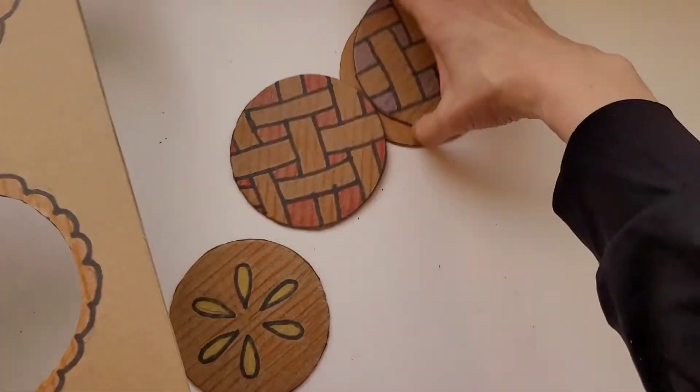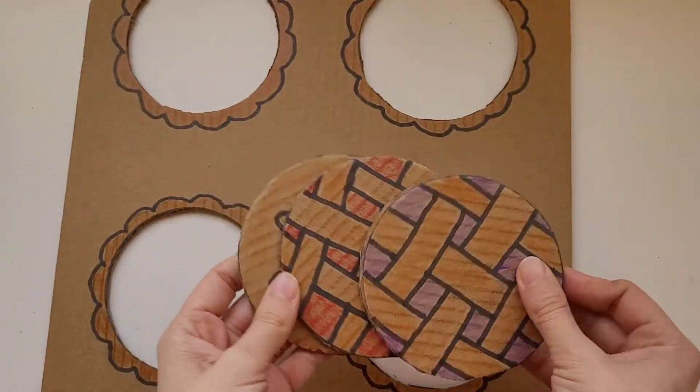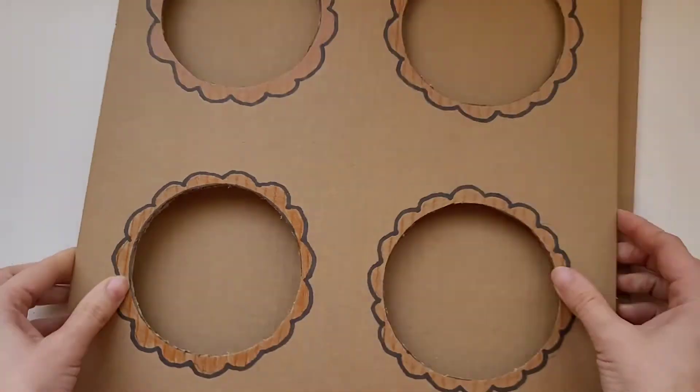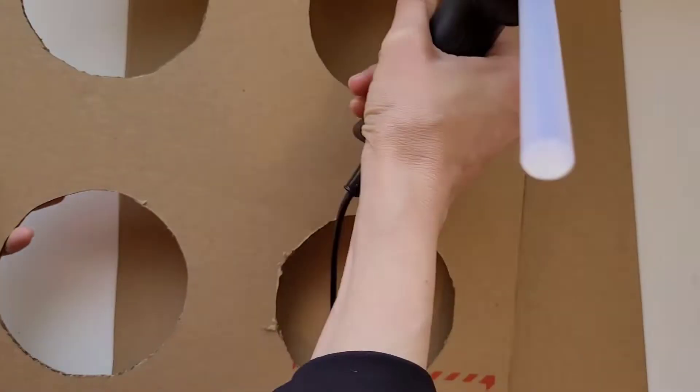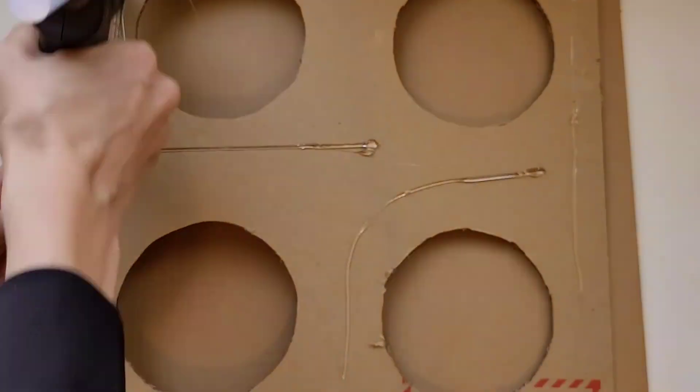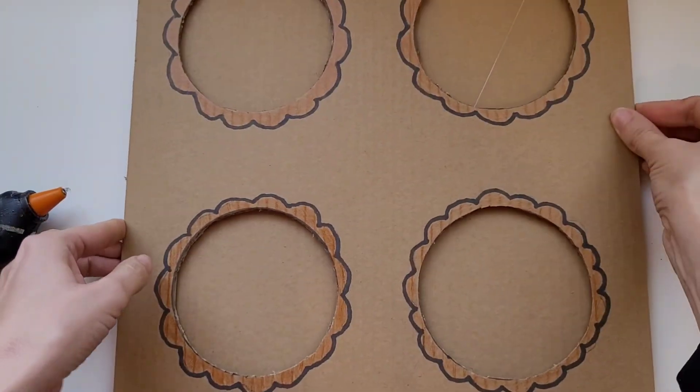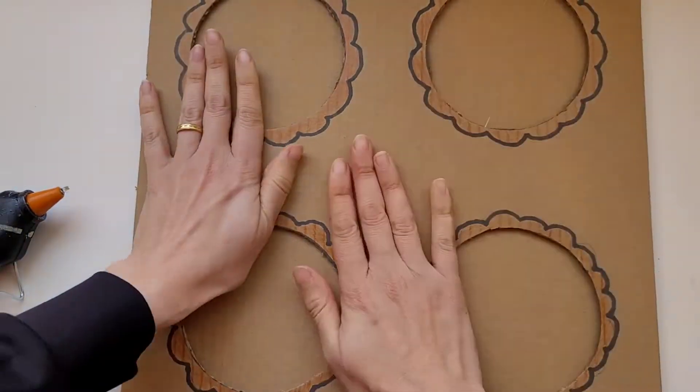After cutting out all four pie circles, we can now move on to the next step. We are going to use a hot glue gun to fasten the top piece which we cut the pies out of to the bottom piece.